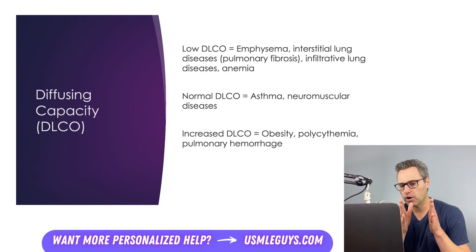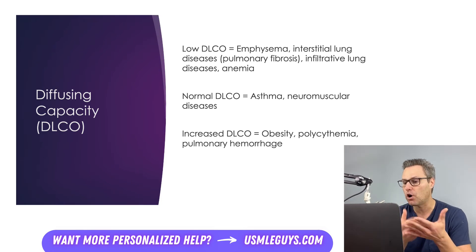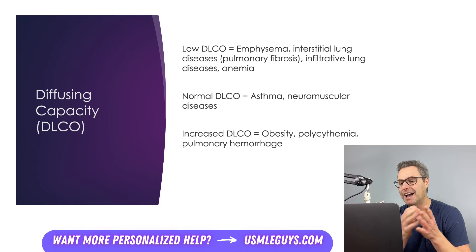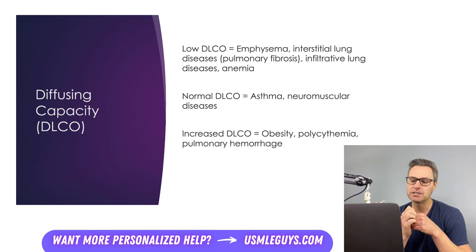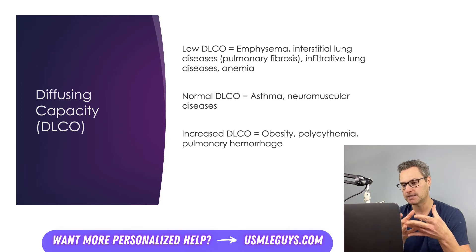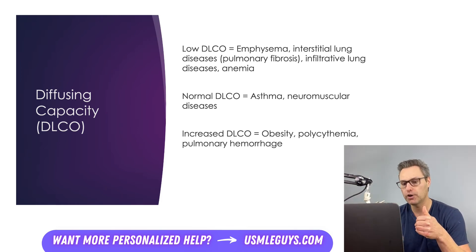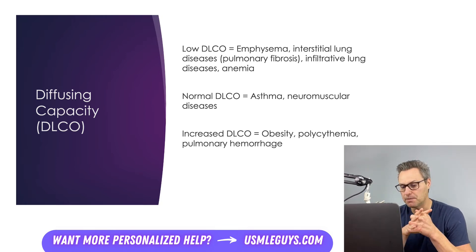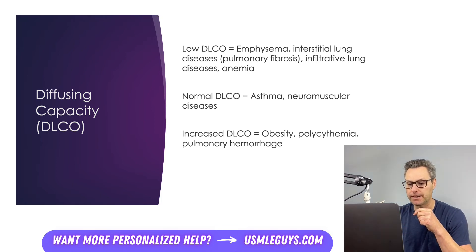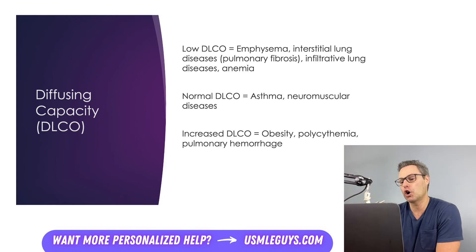It's not only lung diseases that can alter the measured diffusing capacity. Anemia will give you a lower diffusing capacity because there are fewer red blood cells picking up the gas, and conversely, polycythemia would have a higher measured diffusing capacity value. Even something like pulmonary hemorrhage would increase the measured diffusing capacity because of the presence of large amounts of hemoglobin for the carbon monoxide to bind to. So these conditions are artificially altering the diffusing capacity.